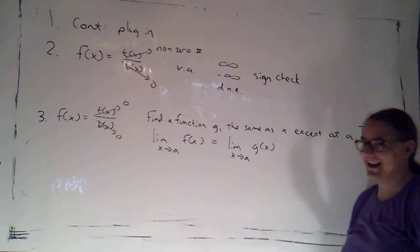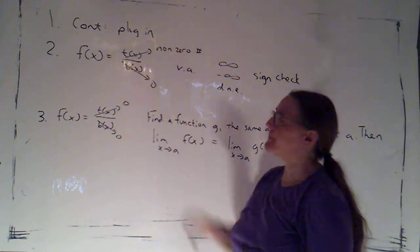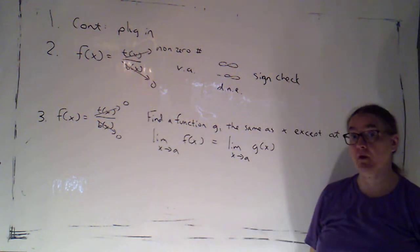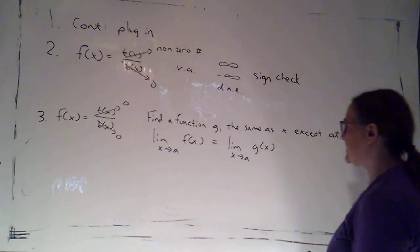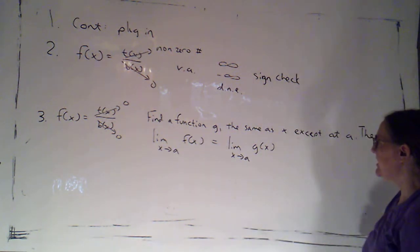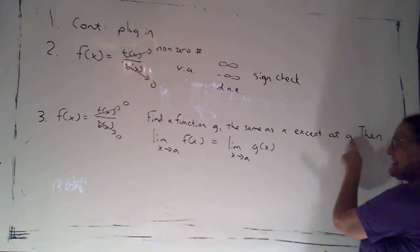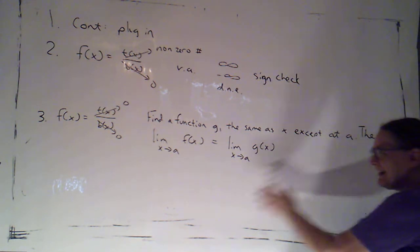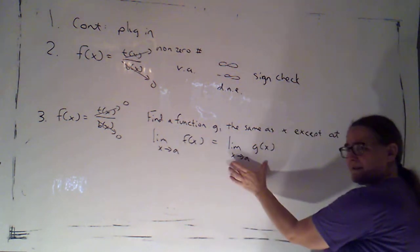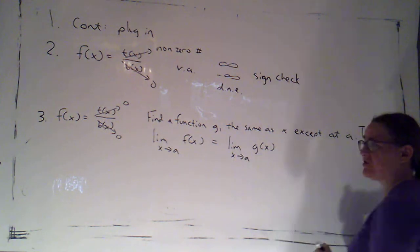The most complicated case we're looking at is if the top and bottom both go to 0, so that I have an indeterminate form. Our strategy is to find another function g that's the same as f except at a, and then the limit of f is going to be the same as the limit of g as x is approaching a.